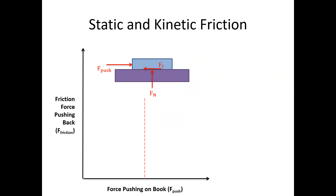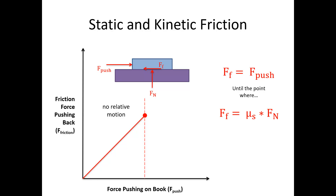There are three distinct phases. In the initial section with no motion, the pushing force is simply equal to the friction force — they're equal and opposite and prevent motion; it's essentially an equilibrium problem. This holds right up until the point of impending motion, where the friction force reaches a maximum equal to mu static times Fn. Here Fn is the normal force between the book and the table — between whatever two objects are sliding relative to one another.